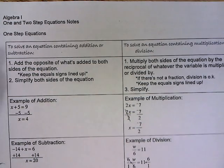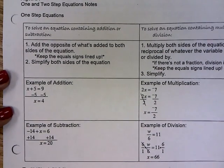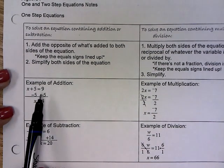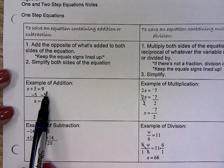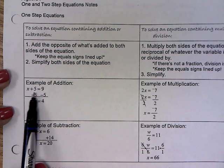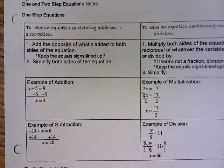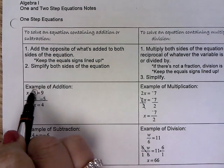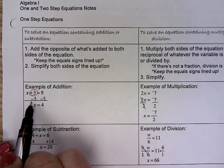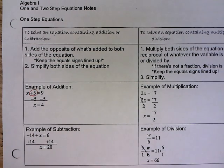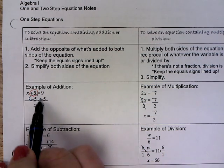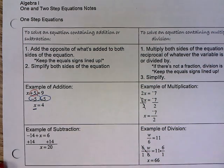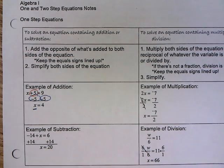In our first example, it says x plus 5 equals 9. Because I am adding 5, I am going to subtract 5 from both sides of my equation. This isolates my variable to leave the x alone, and then 9 minus 5 is 4.